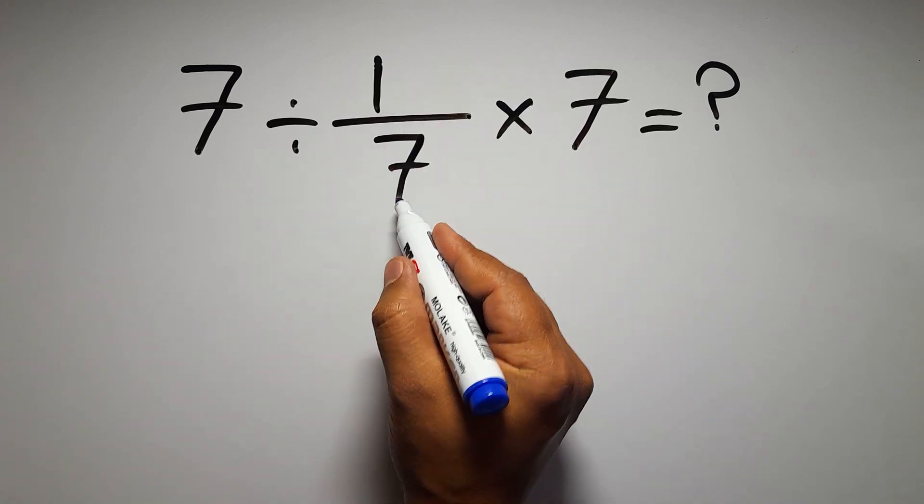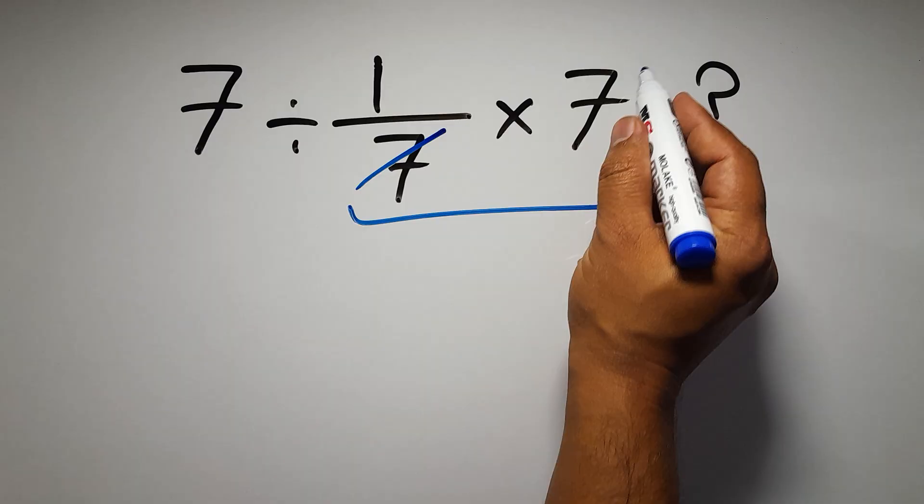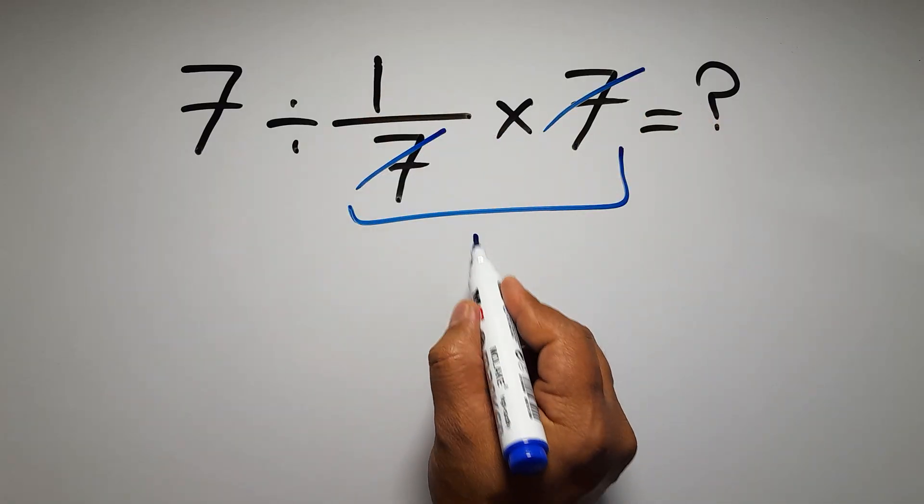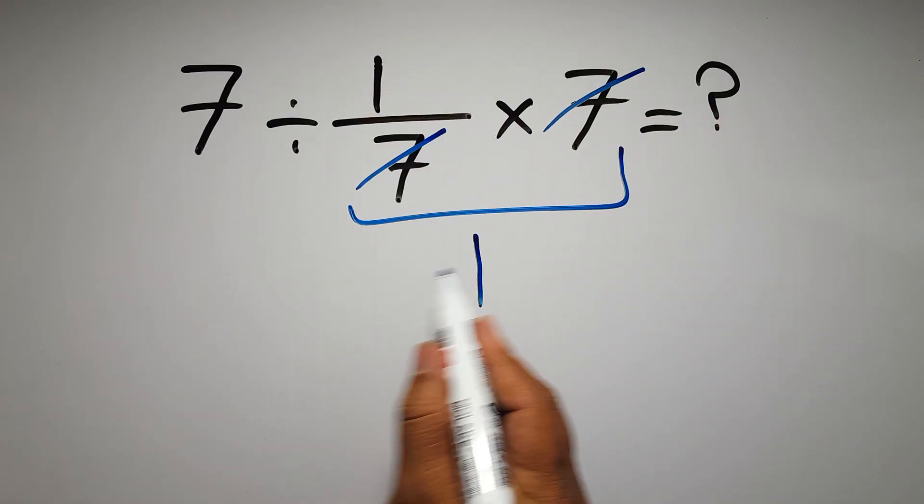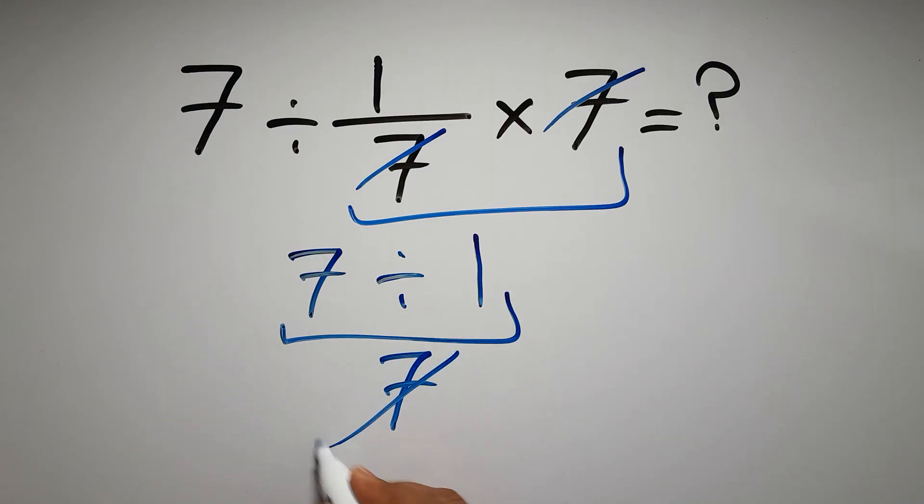First, I do this multiplication: one over seven times seven. We can easily cancel this seven and this seven, so we have just one. And seven divided by one gives us seven. But this answer is not correct because